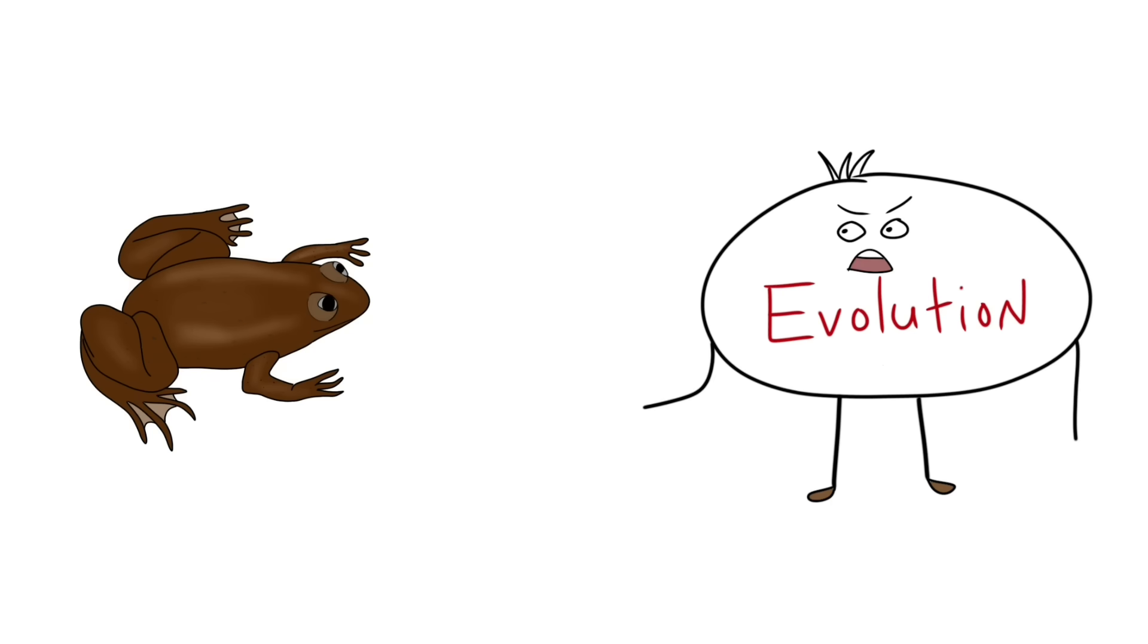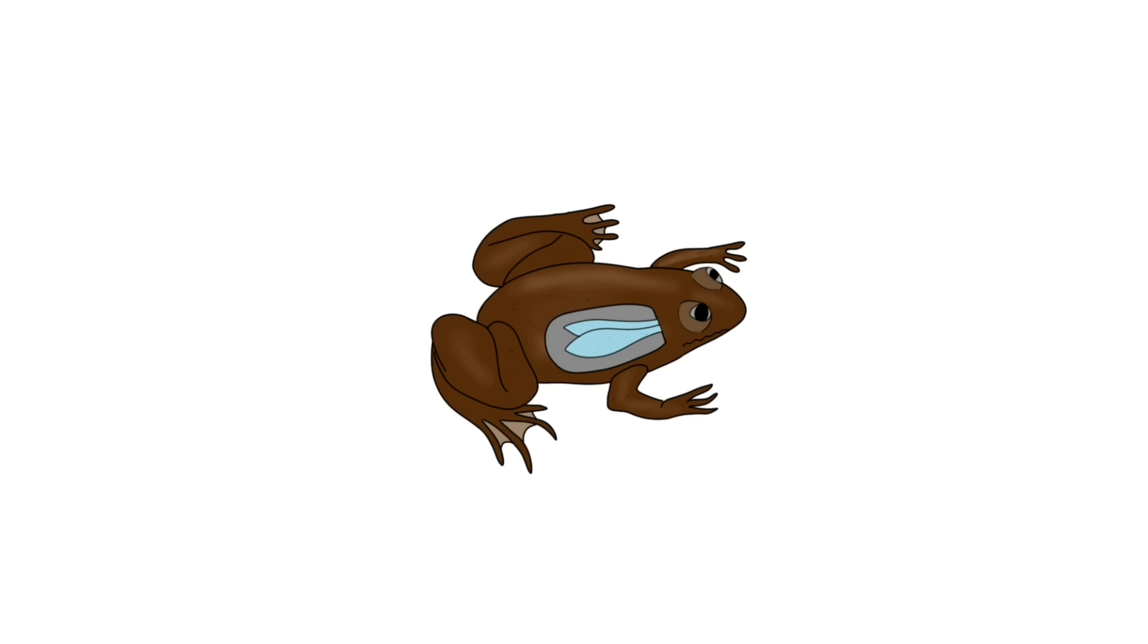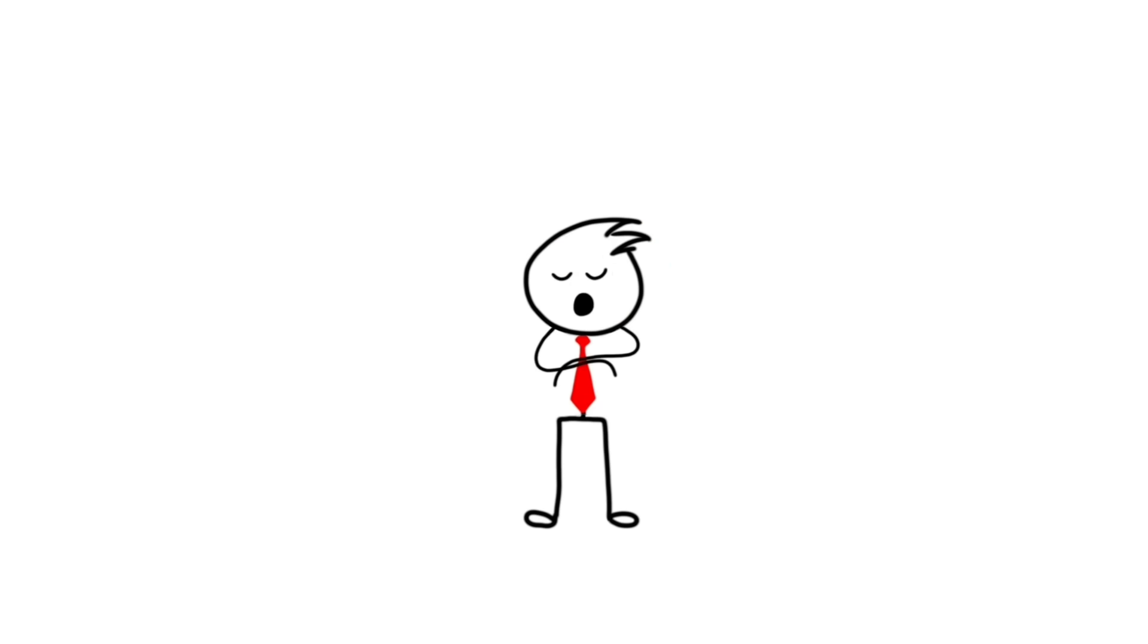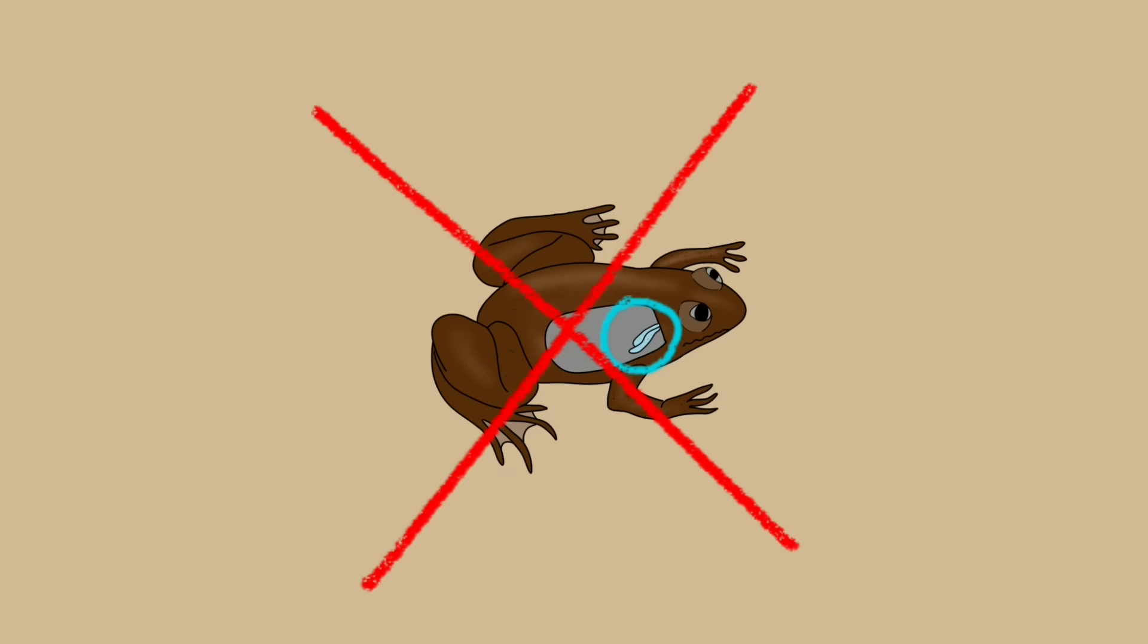Evolution said, 'You puny frogs are water creatures. You don't need no land or lungs. Just give it back.' Thus, the frog lost its lungs. Scientists say that they still have a tiny lung-like organ in the body. But the bad news is, it's so small that they can't live on lands now.